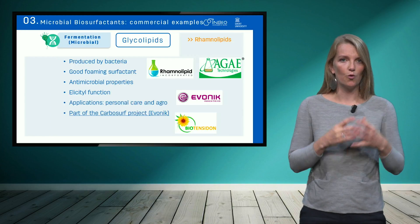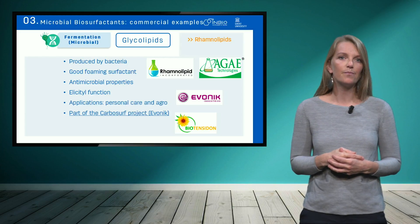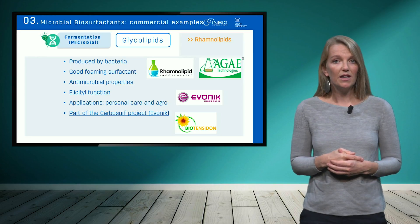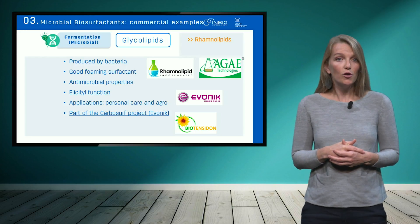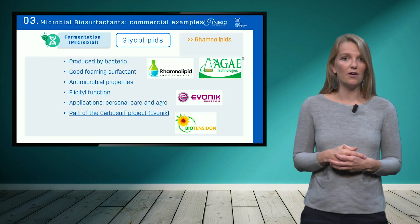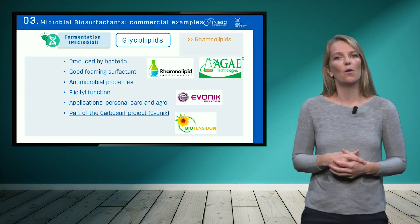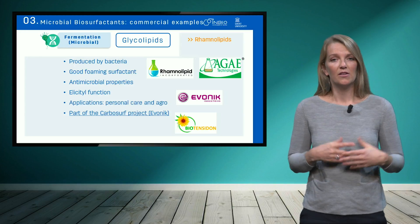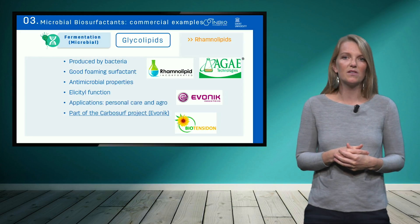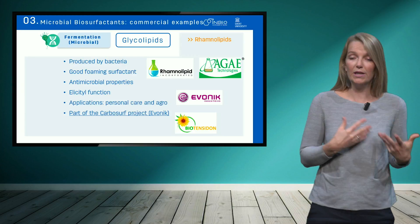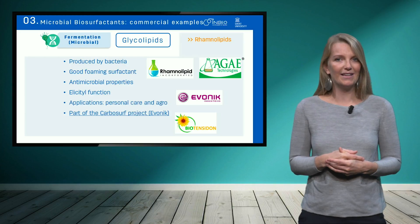Rhamnolipids — rhamnose sugars added to a lipid — are a second well-known example of glycolipid biosurfactants. They are produced by bacteria and are mainly suggested for applications in agrochemicals and personal care products. They are a good foaming biosurfactant and also have antimicrobial and even elicitor properties. The elicitor property means that when applied on plants, the plants will think they are under attack by a pest and will activate certain defense mechanisms, so when the plant is under a real attack, it will already be protected.